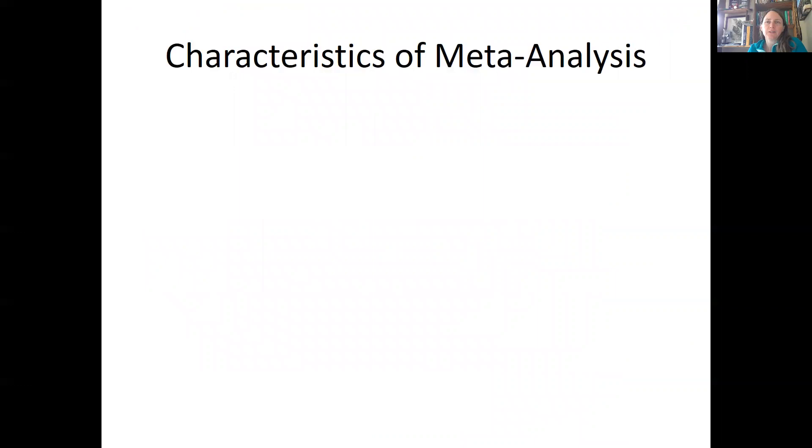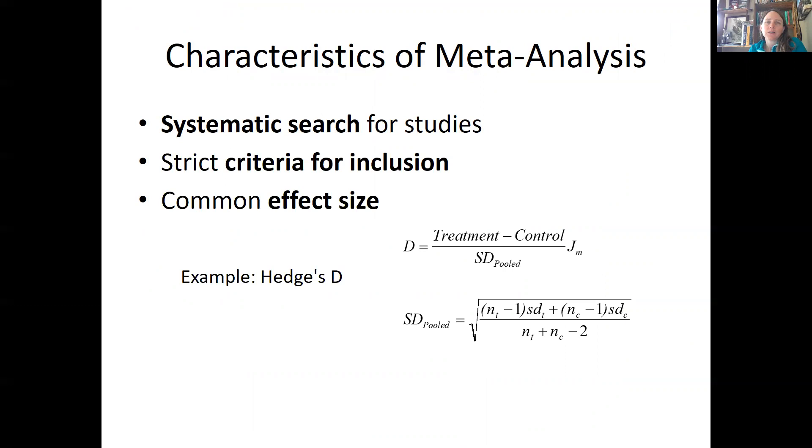So what are the characteristics of a meta-analysis? First of all, you have to do a systematic search for the studies that you're going to include. Second, you have to establish some very strict criteria for whether you're going to include a study or exclude it. And then third, you calculate what's called a common effect size. So you use things like the mean and the standard deviation and the sample size to calculate an effect size. And an example is Hedges D, which is one that you'll use in the lab. And it shows you kind of here how you calculate D.